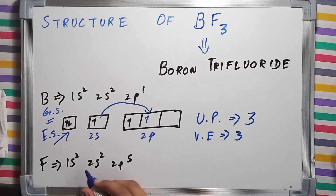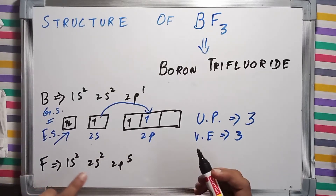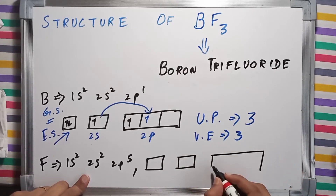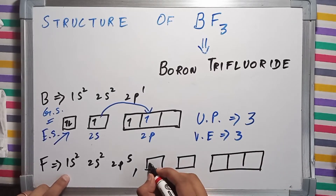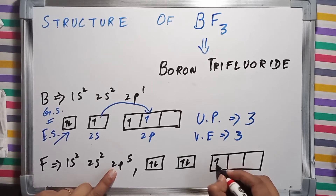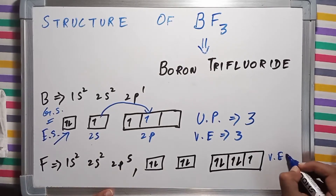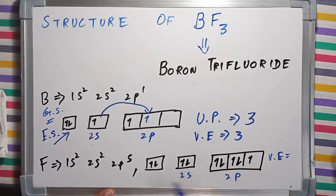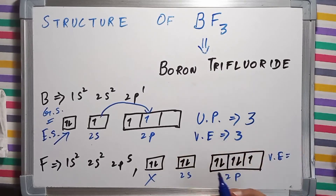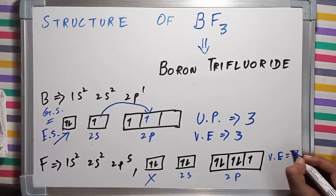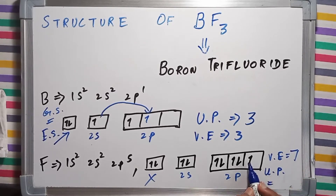As I was saying, fluorine has the electronic configuration 1s² 2s² 2p⁵. Drawing the orbitals: 1s has 2 electrons, 2s has 2 electrons, and for 2p⁵ there are five electrons across the three orbitals. The number of valence electrons for fluorine — counting only the second shell — is 2 + 5 = 7. The number of unpaired electrons is just one.